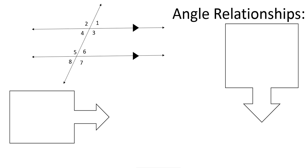The first angle relationship I'm going to talk about is alternate interior angles. Alternate interior angles are on the opposite sides of the transversal, and they are inside the parallel lines. The angle pairs that are alternate interior angles are 4 and 6, and 3 and 5.